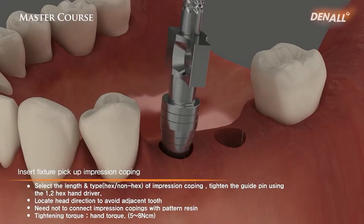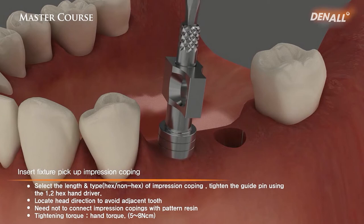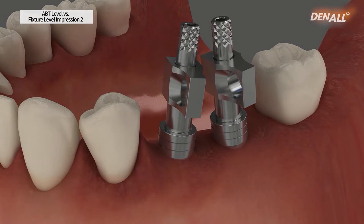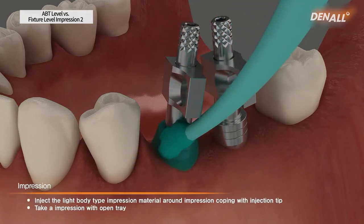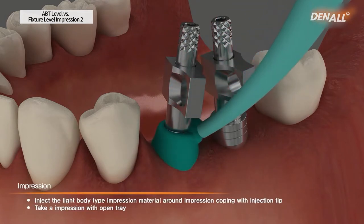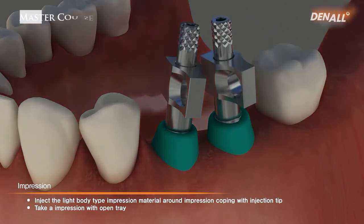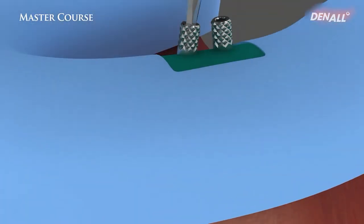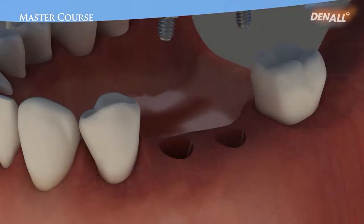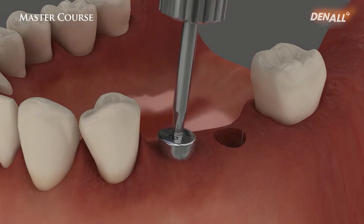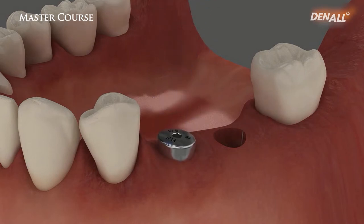This is the pick-up impression coping, so you have to put the hex correctly and then connect. It's the same method as taking impression of natural teeth — meaning you use light and heavy body. And here, you need an open tray with a hole so that after the impression is seated, you can unscrew it before removing the impression. And then you deliver the healing abutment into the mouth again.